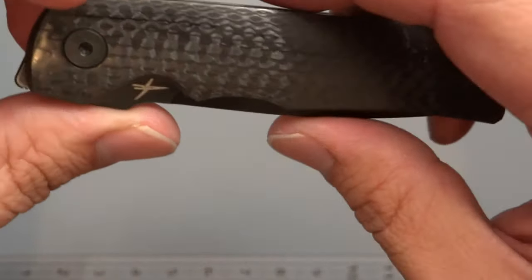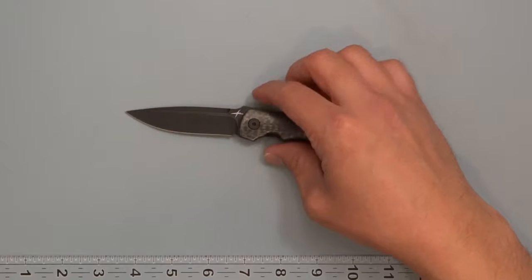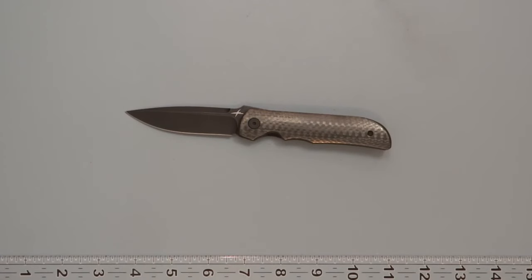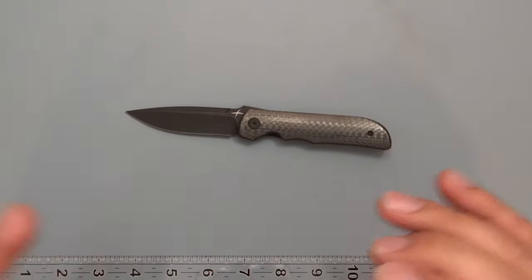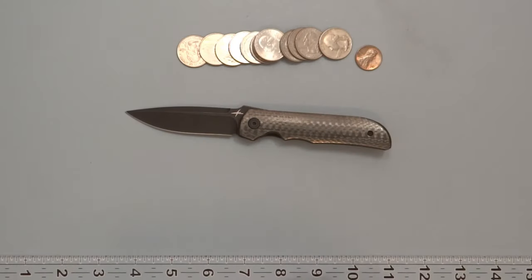As far as weight wise, it comes in at 2.7 ounces. For this channel, if you didn't know, I weigh things with coins because it makes sense. It's something that you can pick up. Well, maybe not in this time because there's a coin shortage, so I'm holding on to some coins. But basically 13 quarters and one penny is what this weighs, 2.7 ounces.